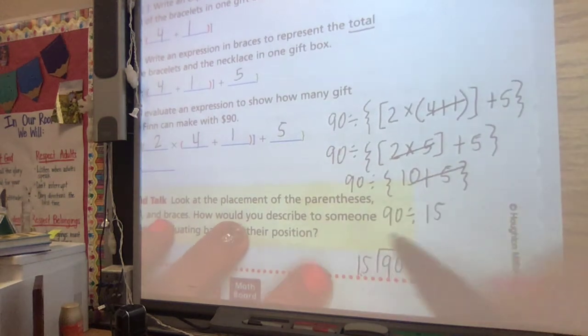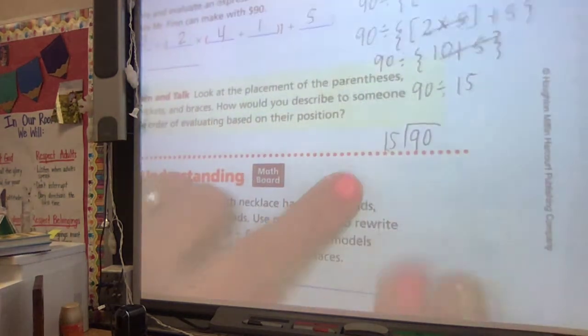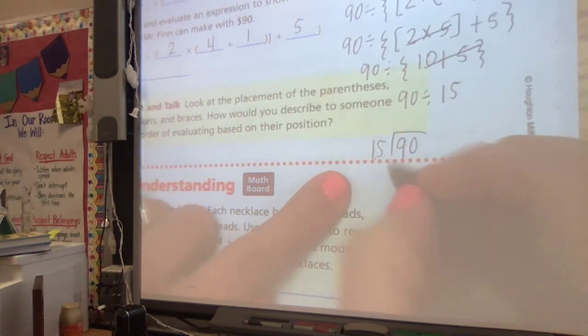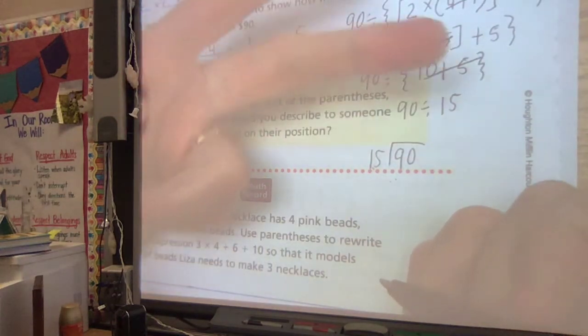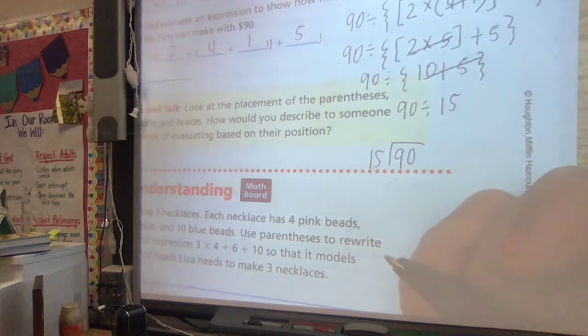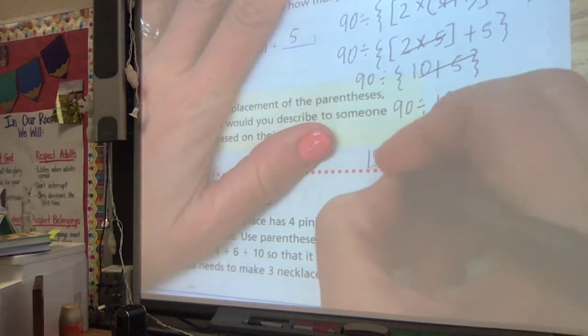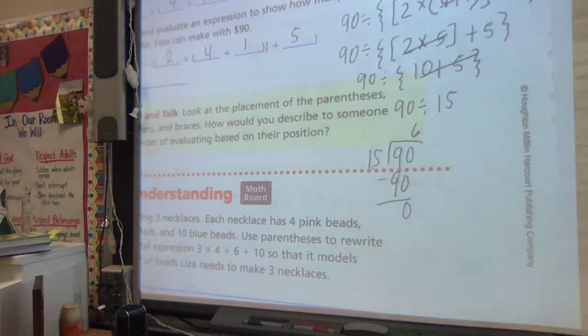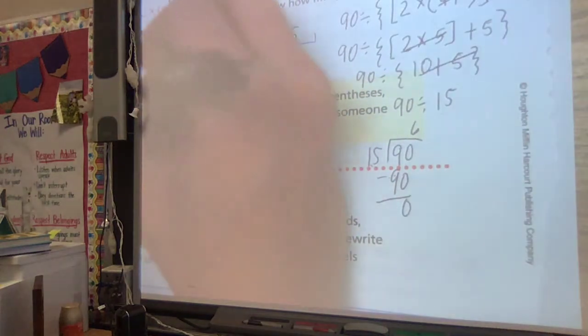We can solve it right over here. We know our 15's. My 15's, I get help because of thinking of the clock: 15, 30, 45, 60, 75, 90. I know it goes in there 6 times exactly. So Mr. Finn can make 6 boxes.